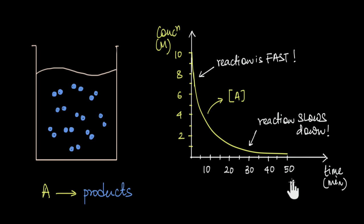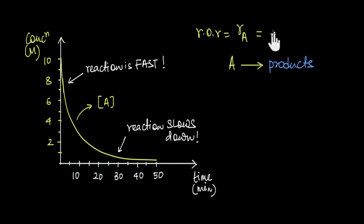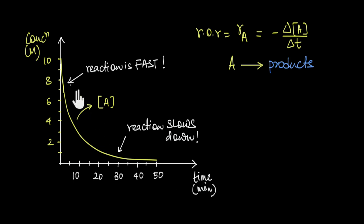Now that we've established that a chemical reaction proceeds at different speeds, let's calculate the average and instantaneous rates. We can think of the rate of reaction in terms of the rate of disappearance of A, which equals the change in concentration of A divided by the change in time. We put a negative sign because during the reaction the concentration of the reactant decreases — so the change is negative — but since rate is reported as a positive value, we multiply by a negative sign to make it positive.